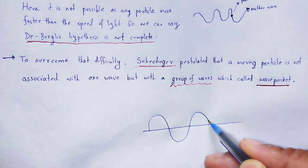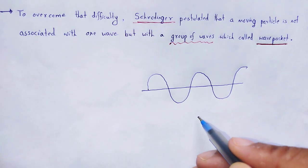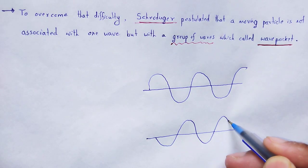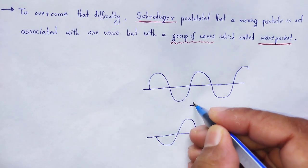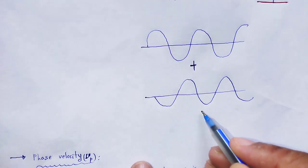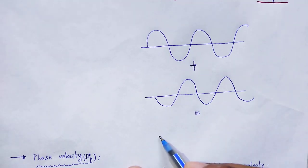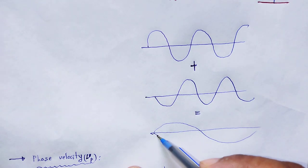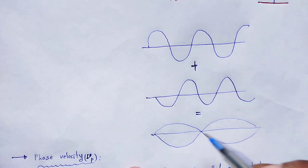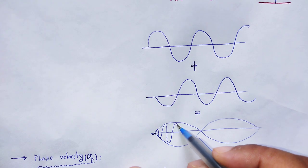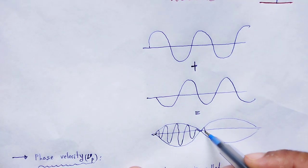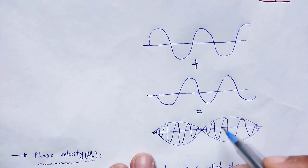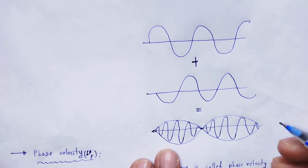Let me showcase it. If that is one wave, and again it is another wave, when these two waves are superimposed with each other we obtain a group of waves which is called the wave packet. That is the envelope, and this is called the wave packet.